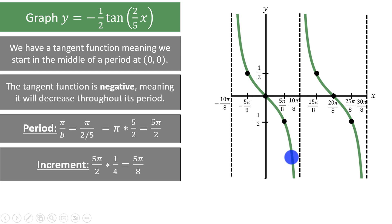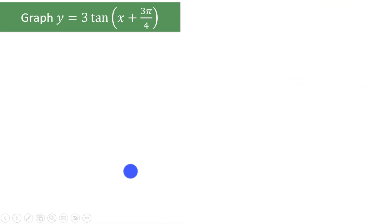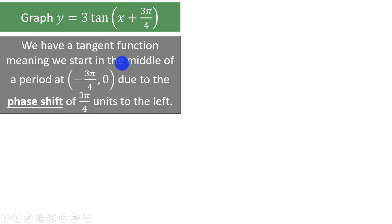We can connect the dots in the pattern of a tangent function to graph y is equal to negative 1 half tangent of 2 fifths x. Let's try another problem. We are asked to graph y is equal to 3 times the tangent of x plus 3pi over 4. We have a tangent function again, meaning that we will start in the middle of a period. In this case, we are shifted 3pi over 4 units to the left, which means we will not start at (0, 0), but instead at (negative 3pi over 4, 0).